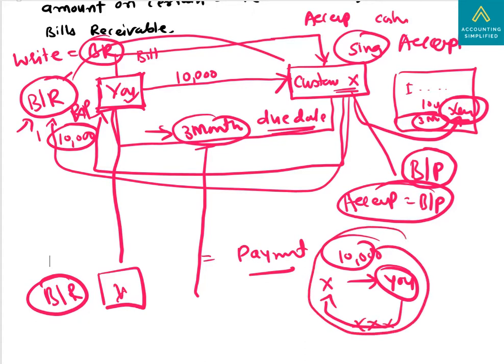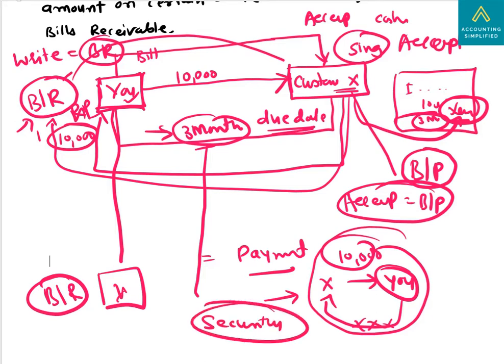Bills receivable and bills payable are taken for surety and security. If Mr. X runs away, you have this guarantee document and can file a case against him.